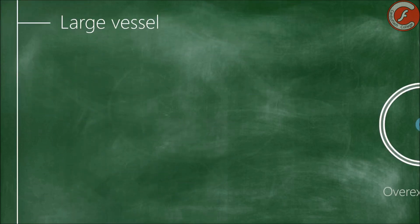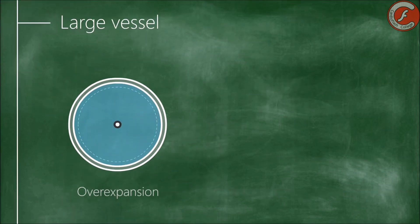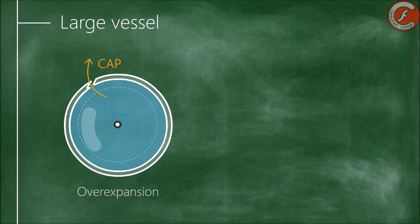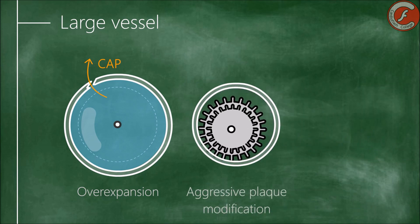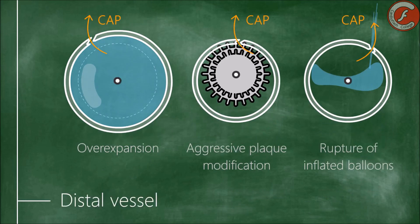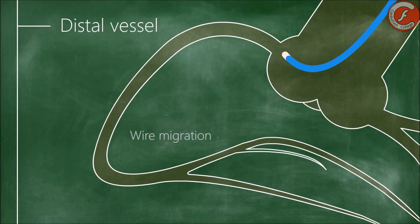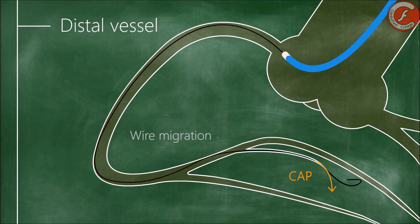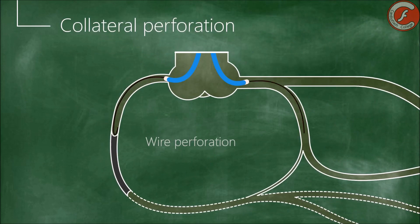The most frequent causes of large vessel perforation are overexpansion of coronary balloons or stents, aggressive modification of atheromatous plaque, and rupture of inflated balloons. The most frequent cause of perforation of distal coronary beds is distal and uncontrolled migration of the angioplasty guide wire, especially if covered with polymeric jackets. Perforation of collateral branches is traditionally associated with retrograde angioplasty techniques on chronic coronary occlusions.